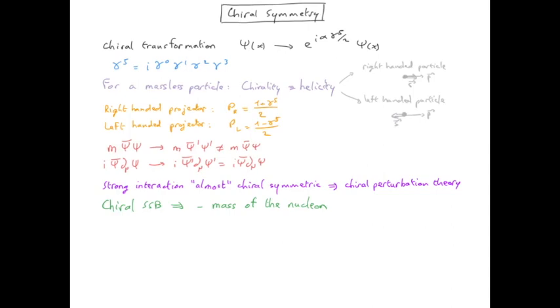It also produces a goldstone boson which in this case is just the pion, which is one of the mediators of the interaction between nucleons. This mechanism of strong nuclear interaction based on chiral spontaneous symmetry breaking was proposed by Nambu in the 60s and he got the Nobel Prize for it in 2008.